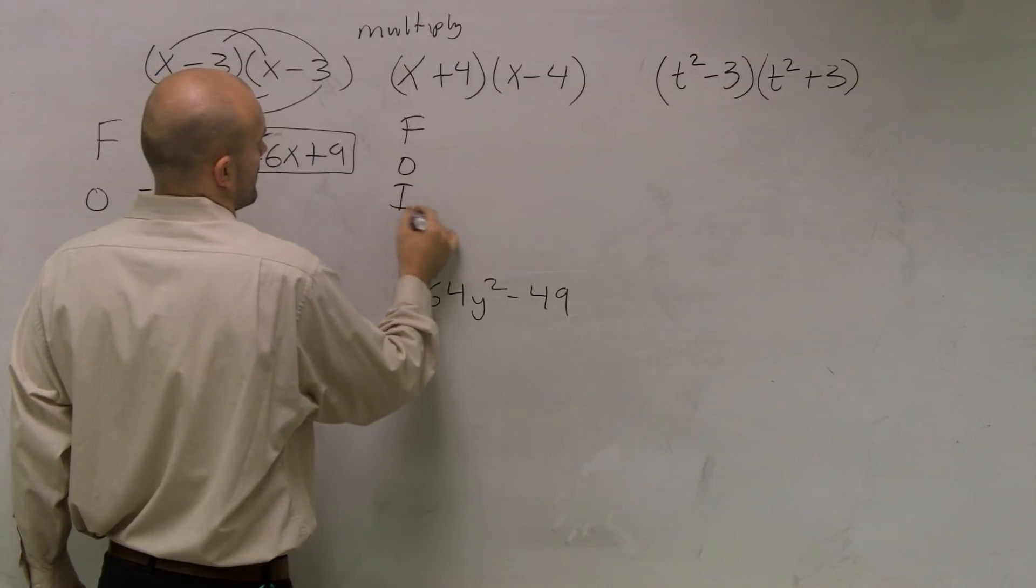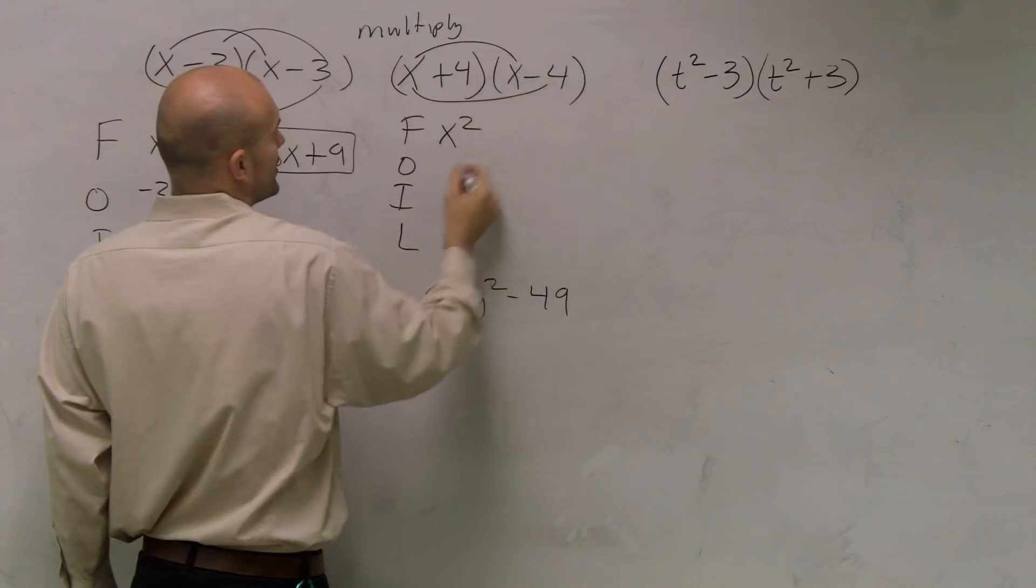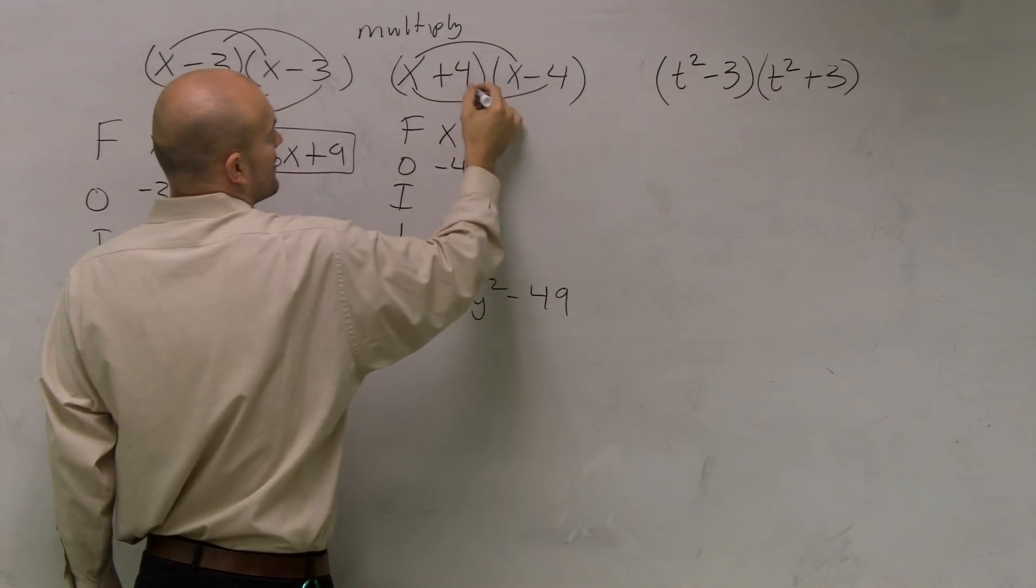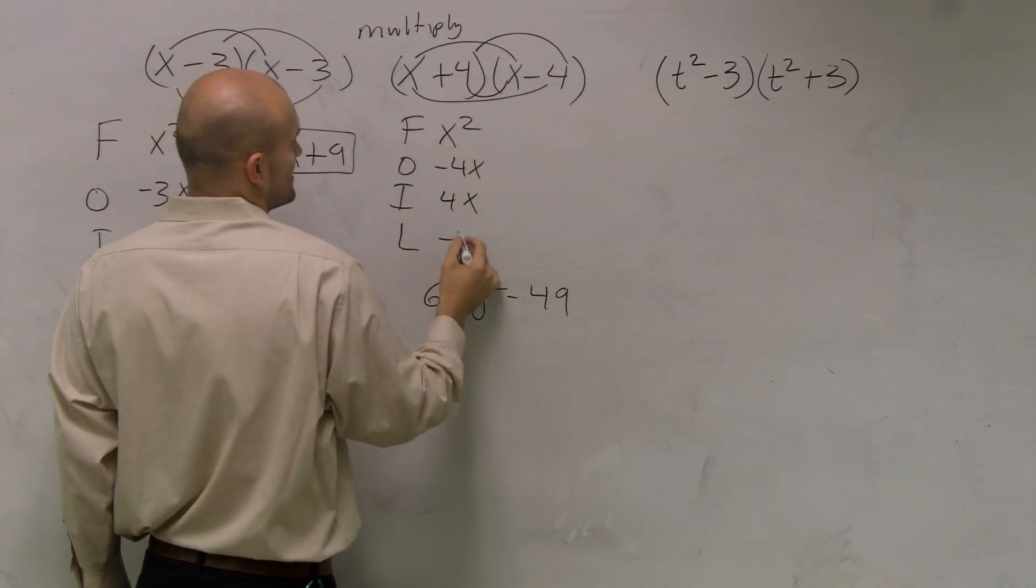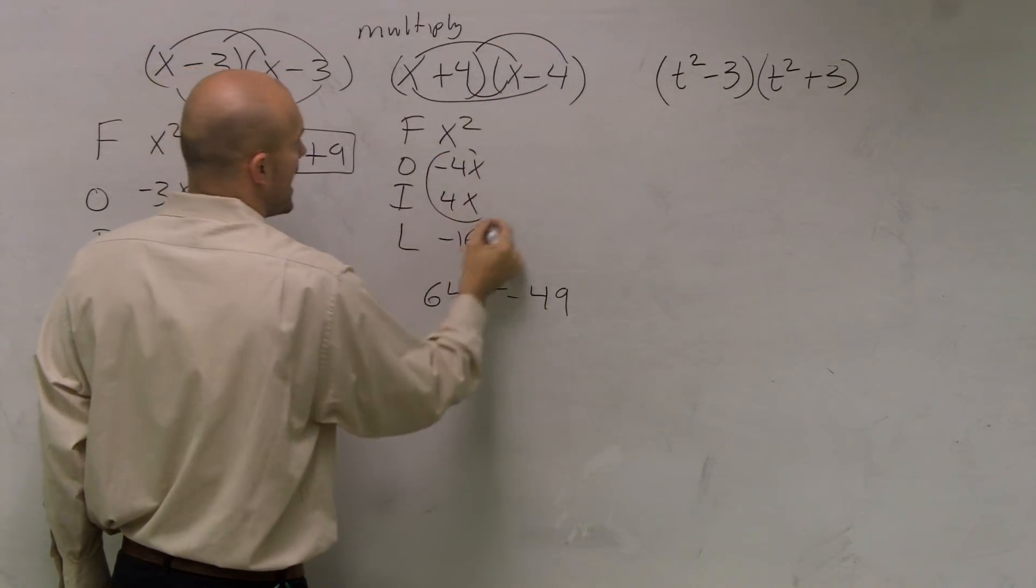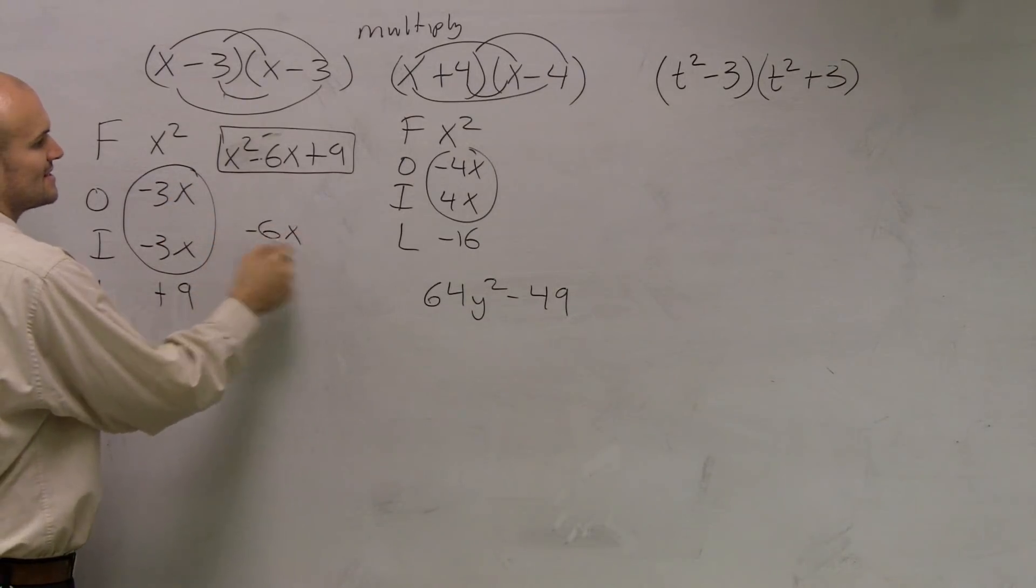So to do FOIL here, I get x times x is x squared. The outer gives me negative 4x, the inner gives me positive 4x, and the last gives me negative 16. Now, what happens to my middle terms? Here, I added negative 3x and a negative 3x, gave me negative 6x.